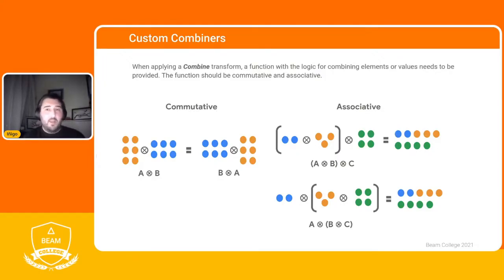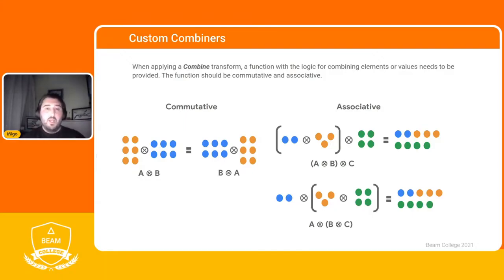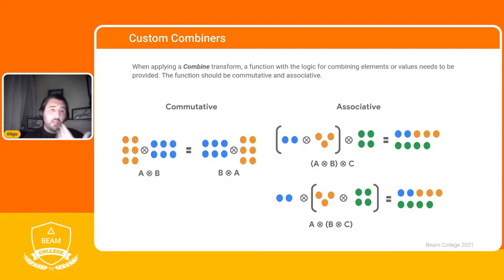This requirement exists because when running combiners across multiple workers, we don't have a guaranteed element order. The output must always be the same regardless of which worker holds which elements or the order in which combines are executed.